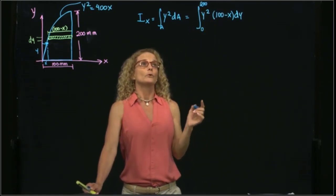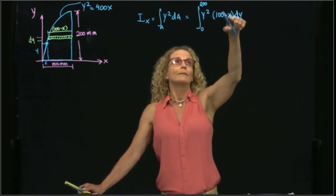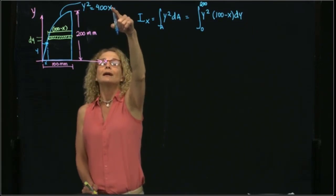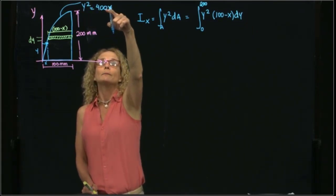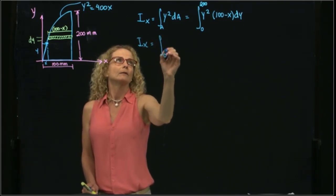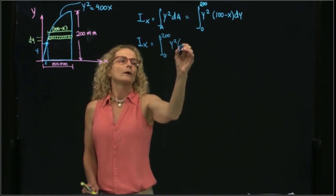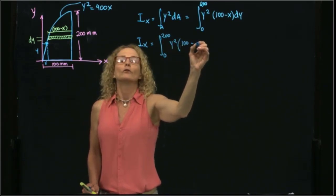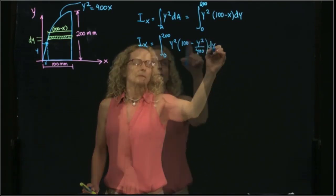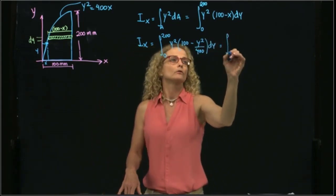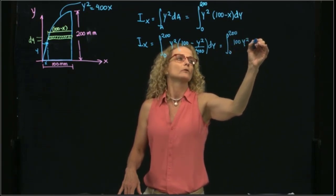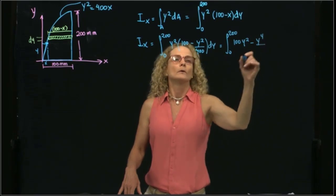I have to put all variables inside my integral in terms of my variable of integration. As you see, x equals y squared divided by 400. So I can write the integral as y squared times (100 minus y squared over 400) dy. Multiplying those two values gives 100y squared minus y to the fourth over 400.